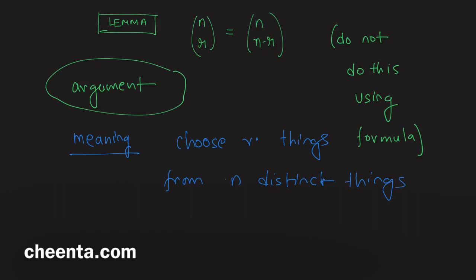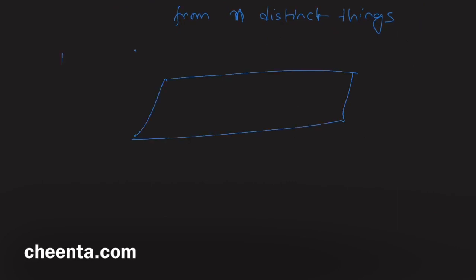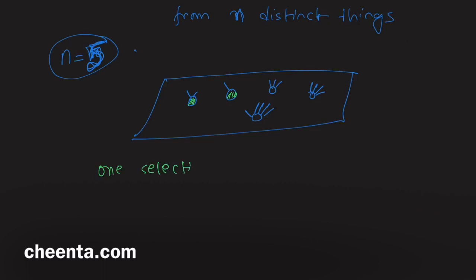Imagine that these n distinct things are on the table. Suppose n equals 5, so you have 5 different objects on the table — I'll put some labels on top of them just to make sure they're distinct. Now suppose you want to select two objects, the two marked in green. This is one selection — one selection of two things from five. There are several ways to do this; this is one such selection.